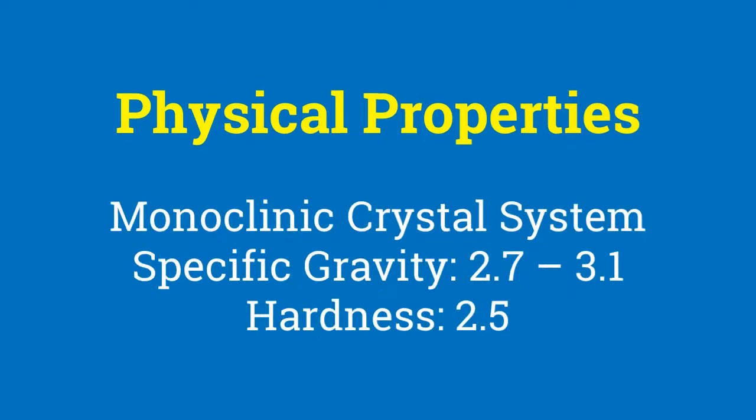All mica have a monoclinic crystal system with specific gravity ranging from 2.7 to 3.1, and are soft minerals of hardness 2.5 on Mohs' scale.